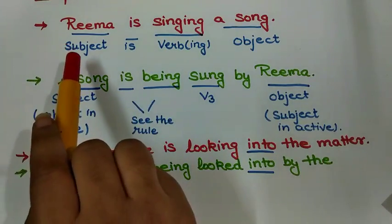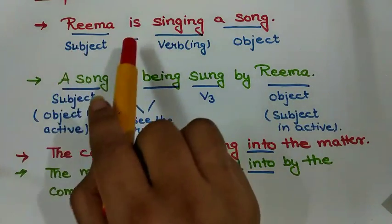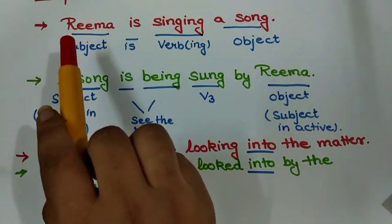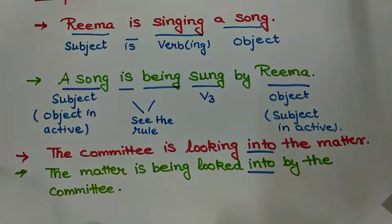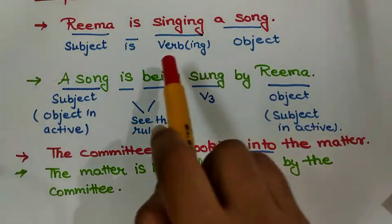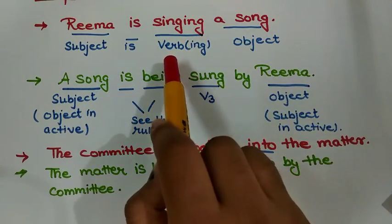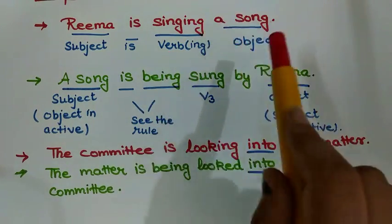Rima is the subject here. 'Is' because Rima is a singular noun, we are using 'is' as a singular helping verb. Then comes verb in the ing form, and 'a song' is object.